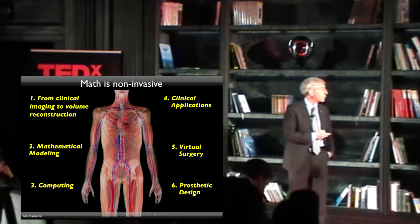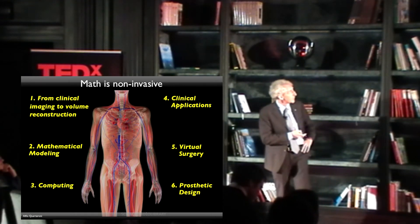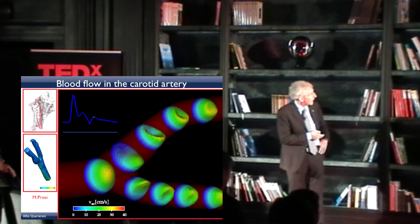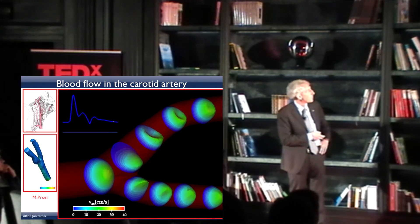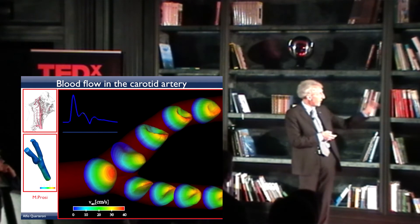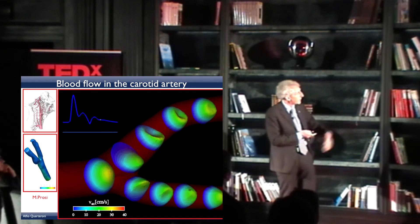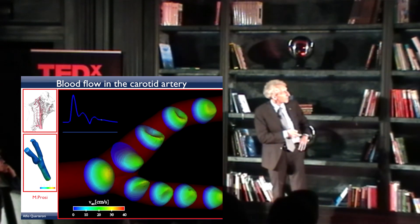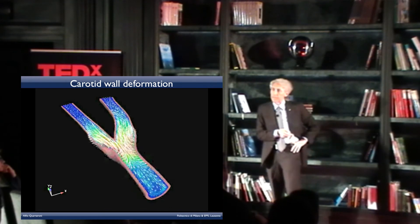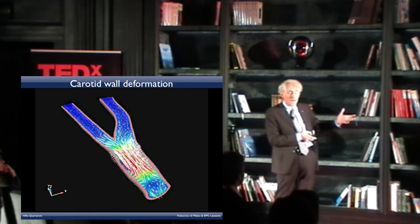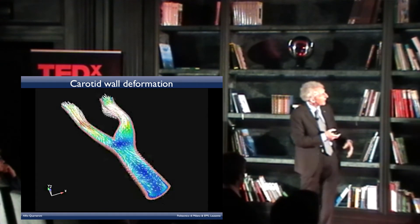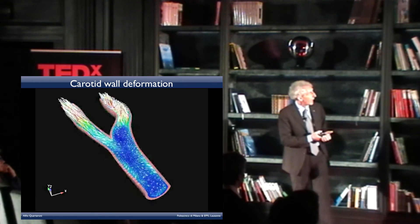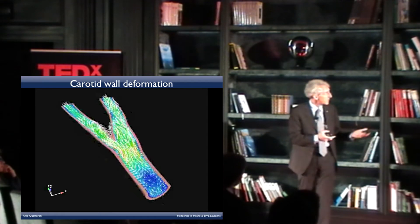Math is non-invasive — you can use it in many contexts, describing different scenarios and producing quantitative, useful information. This is the carotid artery, and here is the blood flow over a single heartbeat — a wavelet describing the peak impulse from the heart. This is obtained by solving the Navier-Stokes equations. A more realistic version includes interaction with the deformation of the arterial wall, simulating the way healthy arteries behave.